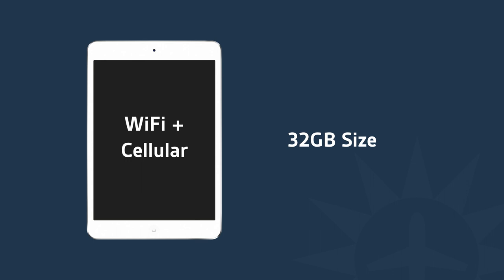Whatever screen size you choose, we do recommend getting the Wi-Fi Plus Cellular version. Every iPad comes in two versions: Wi-Fi only or Wi-Fi Plus Cellular. The reason we recommend Wi-Fi Plus Cellular is because only the cellular model has a GPS built in. We also recommend a minimum of the 32GB size, because you could download all of the data that ForeFlight has available, and it'll all fit comfortably on the 32GB iPad.